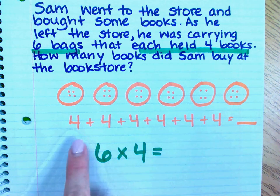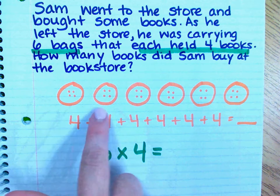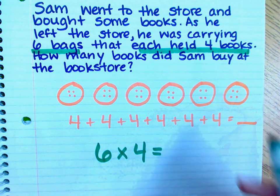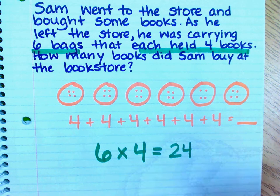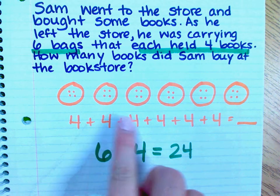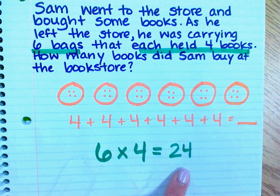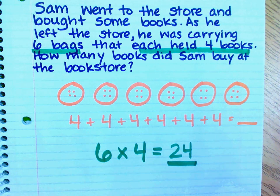I can solve this problem by quickly skip counting by 4s: 4, 8, 12, 16, 20, 24. So instead of adding over and over, we have a much more efficient problem. The product is 24, so Sam bought 24 books at the bookstore.